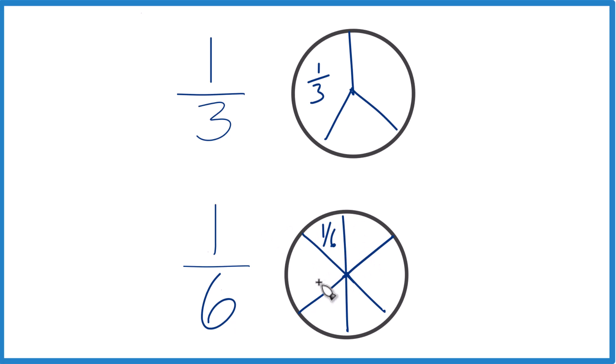So, you can see that the 1 sixth pieces, they're going to be smaller than the 1 third. So, 1 third is greater than 1 sixth. That's a good way to think about it.